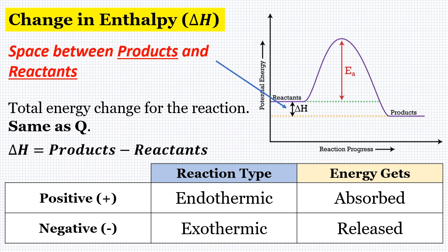The final item we need to identify on our potential energy diagram is the change in enthalpy, which is delta H. If you look on the diagram, delta H is the space between the products and the reactants. Delta H, or the change in enthalpy, is the total energy change for the reaction — it's the same as Q in our equation Q = mcΔT. Delta H can be found by subtracting the energy of the products from the energy of the reactants. Looking at the diagram, our reactants are sitting up high and our products are sitting down below; the space between those is our delta H.